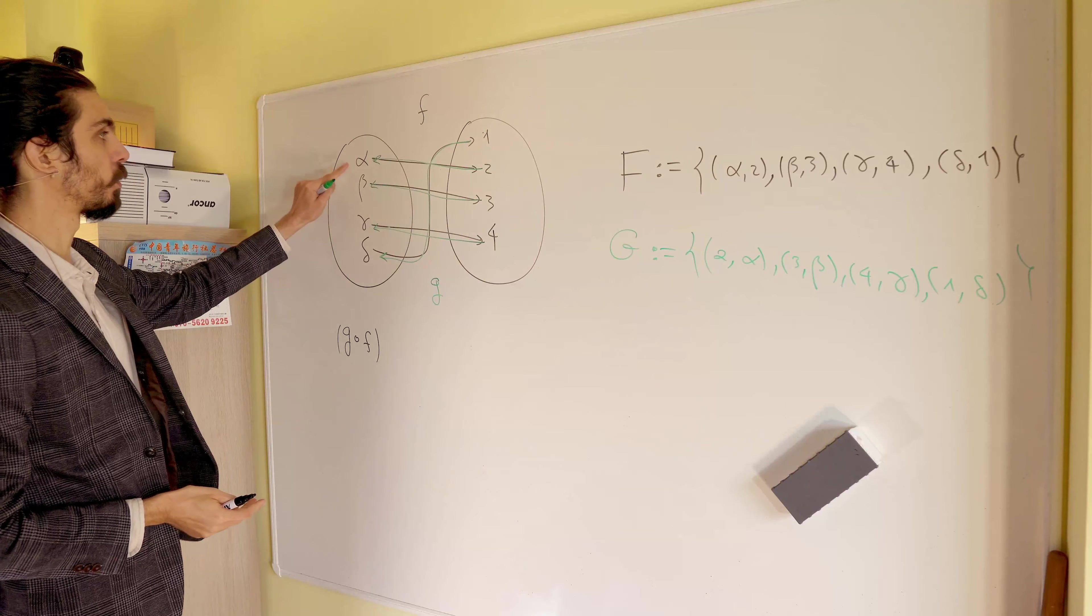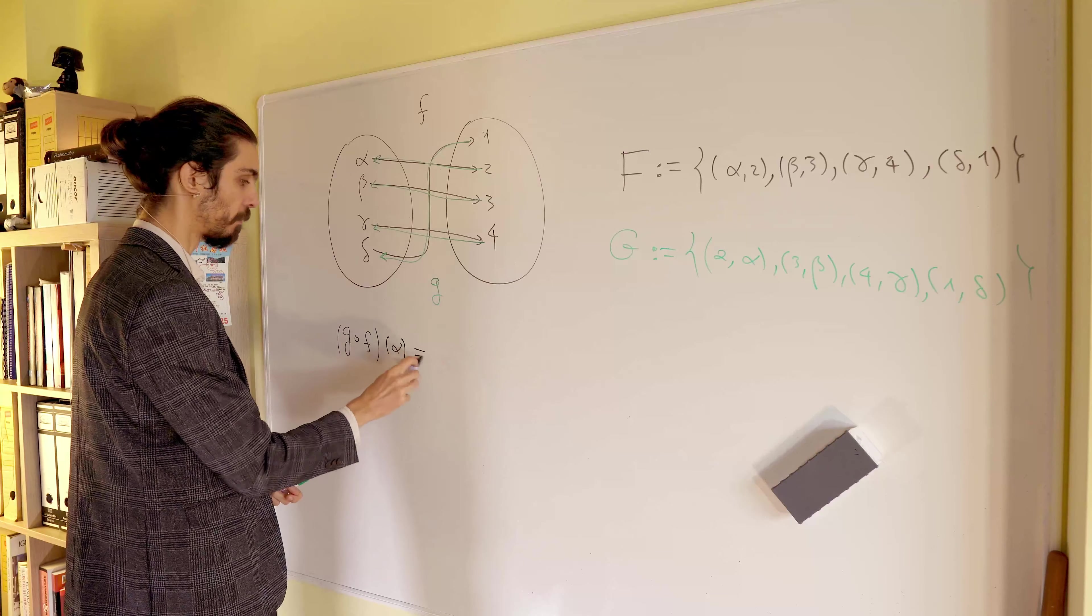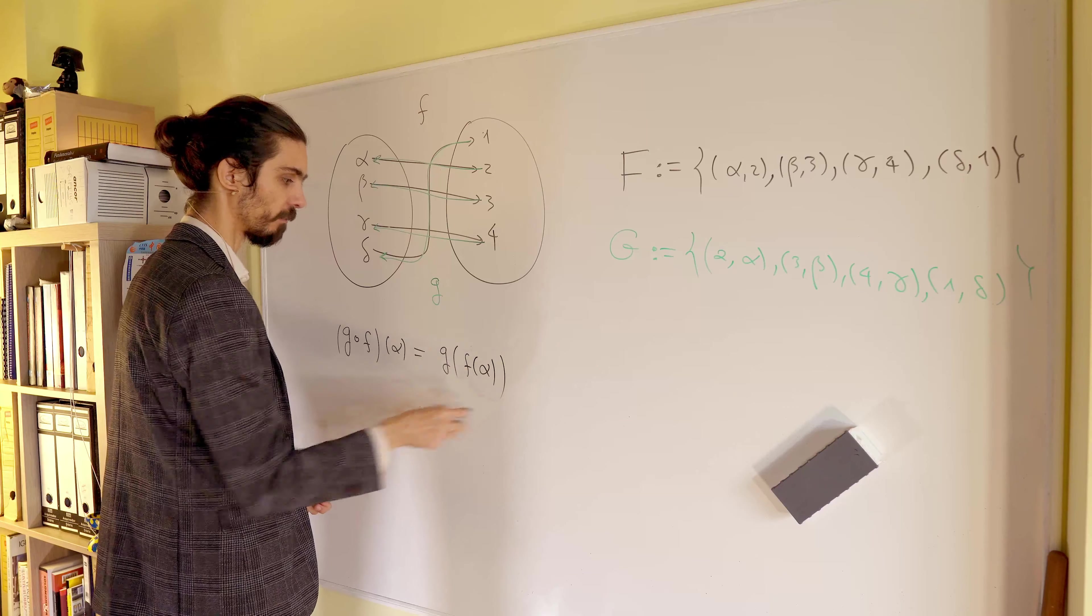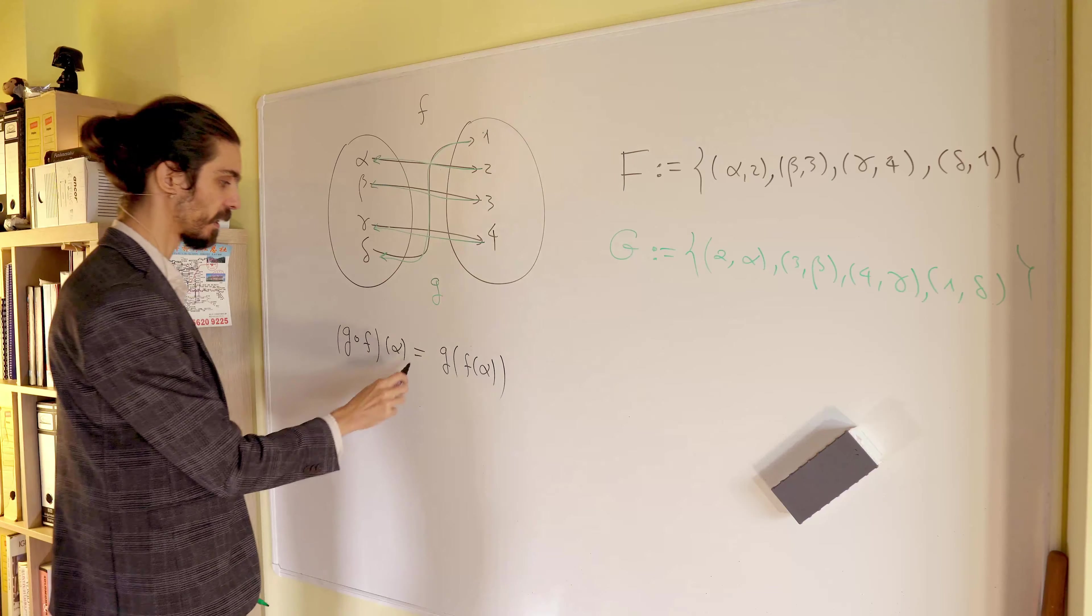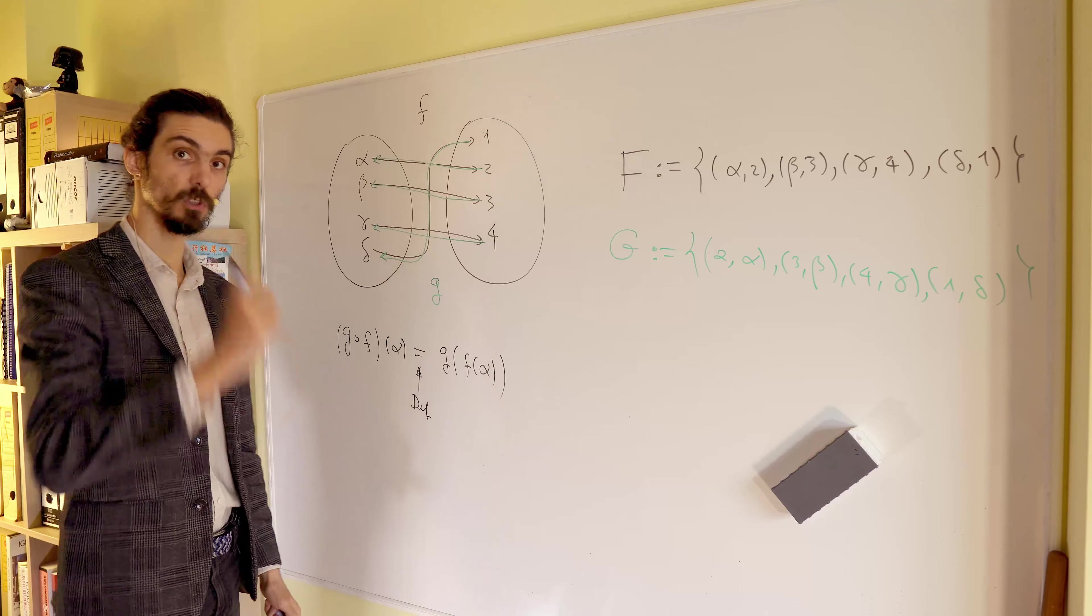So, for example, if I have g of f of, for example, it could be alpha. Recall that this, by definition, is g of f of alpha. Okay? So this step here is, by definition, of compositional function that we saw previously.